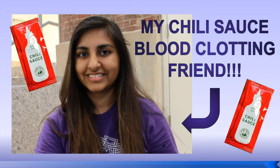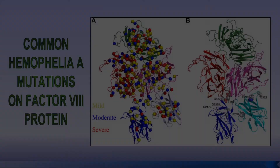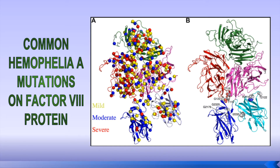Do you remember my chili sauce blood clotting friend? Well, her body naturally makes ample amounts of Factor VIII. However, there are many people who have a mutation in the Factor VIII gene, which results in the X-linked disorder hemophilia A.